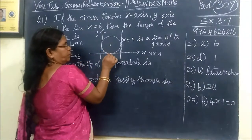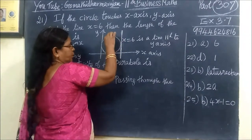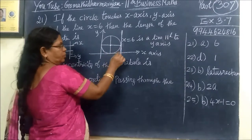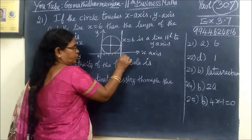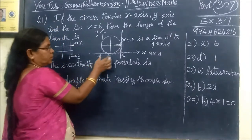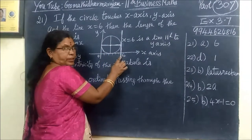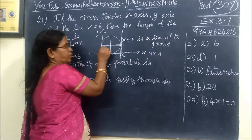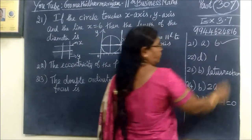This is the center. The distance from the y-axis to the line x equals 6 is 6. This distance is the diameter. So the diameter is equal to 6. So option A is correct.